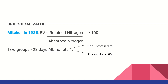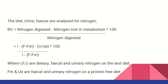Amino acids can be transformed by the body. The experiment is also 28 days for albino rats — white rats. Two groups are used: a protein diet (10%) and a non-protein diet. Absorb and calculate. Mitchell uses diet, urine, and feces from the albino rats to determine biological value.